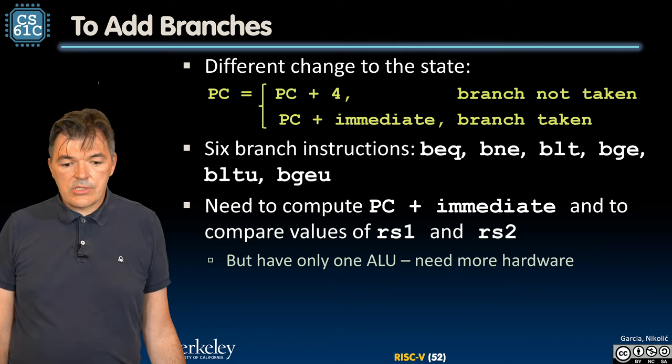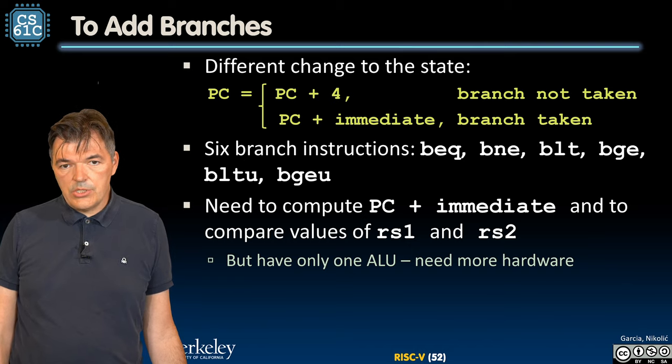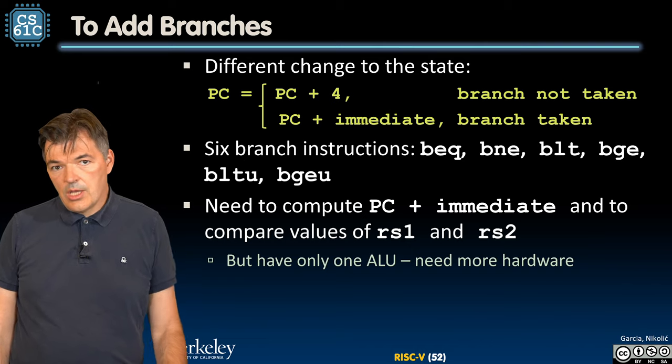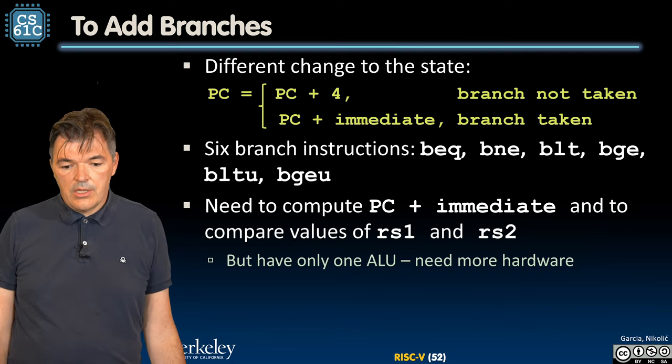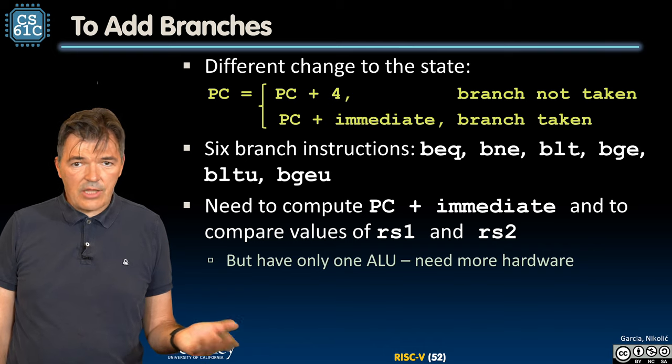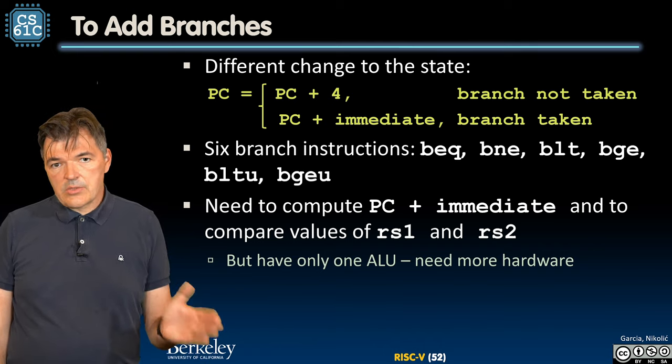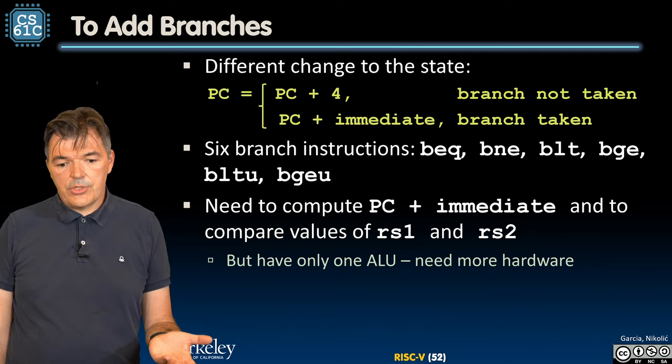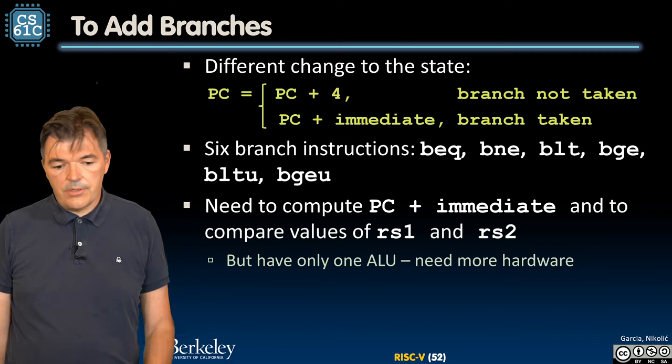There are six different branch instructions: BEQ, BNE, BLT, BGE, and BLTU, BGEU, the last two being unsigned versions of the BLT and BGE, that essentially evaluate conditions whether the contents of RS1 and RS2 are equal to each other, not equal to each other, less than, greater or equal, and so on.